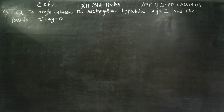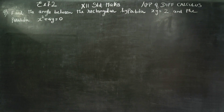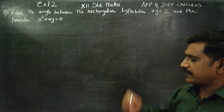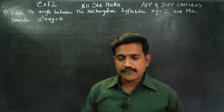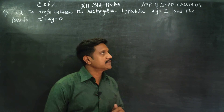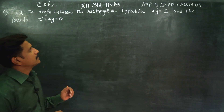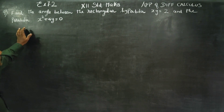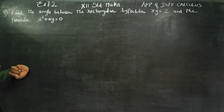Hello 12th standard students, I am Etruh Karnagaran. In exercise number 7.2, sum number 9, find the angle between the rectangular hyperbola and the parabola.